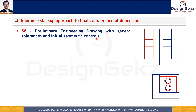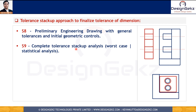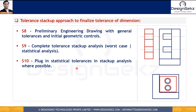The eighth step involves preparation of preliminary engineering drawings with all general tolerances and geometrical controls identified so far. In the ninth step, we begin tolerance stack-up analysis. All dimensions and tolerances in the stack-up analysis chain need to be derived from the preliminary engineering drawings. We select the worst case or statistical method based on the number of contributors into the chain and whether manufacturing is mass production. Where critical dimensions and tolerances are carried forward from existing manufacturing processes or parts, we should collect actual manufacturing data and plug in plus-minus three-sigma tolerances or statistical tolerances into the stack-up analysis to make the results more realistic.